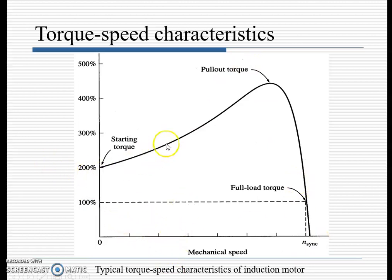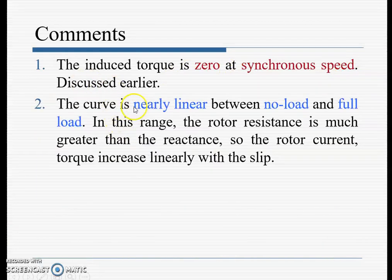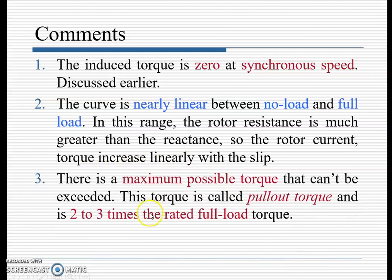The torque can increase up to about 400% of full-load torque. The induced torque is zero at synchronous speed. The curve is nearly linear between no-load and full-load; in this range, rotor resistance is much greater than reactance so rotor current and torque increase linearly with slip. There is a maximum possible torque called the pull-out torque, which is two to three times the rated full-load torque.